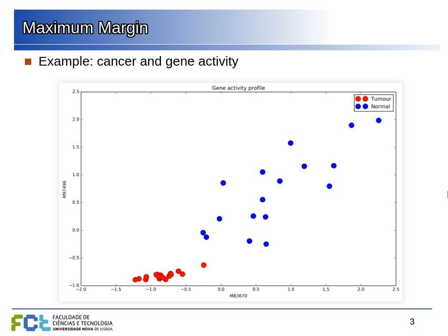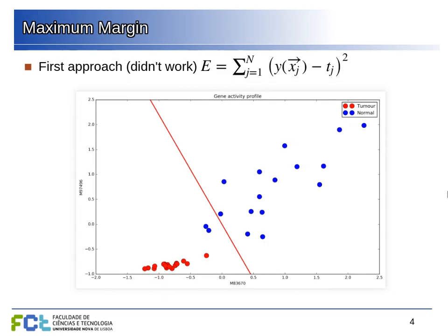We saw this example when we started looking at classification, and we tried to create a classifier by minimizing the quadratic distance to the decision line. This discriminant line tells us which class each example belongs to. We saw that this doesn't work because, unlike in regression where we adjust a model as close as possible to points, in classification we want to partition the space into different regions. Points away from the frontier don't really matter — only those close to the frontier do.